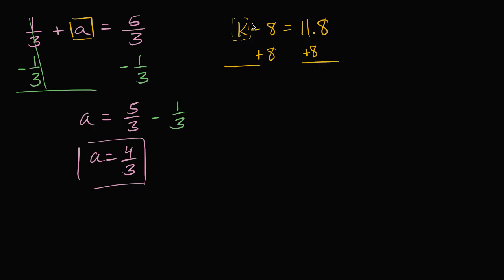The left-hand side, you were subtracting eight and then you're adding eight. That's just going to cancel out and you're just going to be left with k. And on the right-hand side, 11.8 plus eight. Well, 11 plus eight is 19. So it's going to be 19.8. And we're done.